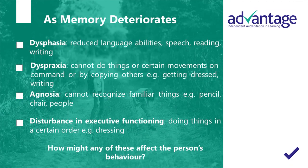The deterioration in memory in people with dementia can have a number of different effects on their behaviour. If they develop dysphasia they will have reduced language abilities — speech, reading and writing. Dyspraxia means that they cannot do things or certain movements on command or by copying others, such as getting dressed or writing. Agnosia means they cannot recognise familiar things such as a pencil, a chair, or people. There can also be a disturbance in executive functioning — doing things in certain orders, for instance dressing.